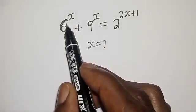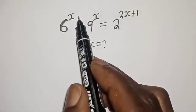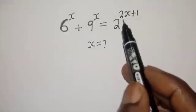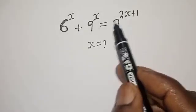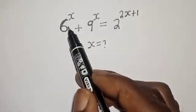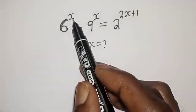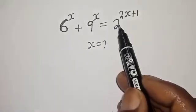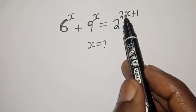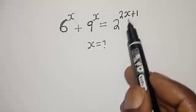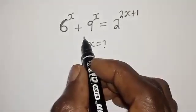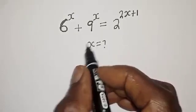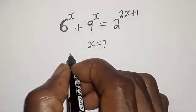Hi everyone, welcome to my class. In this class, we want to find the value of s from this equation: 6 raised to power s plus 9 raised to power s is equal to 2 raised to power 2s plus 1. But before we proceed, please don't forget to like, share, comment and subscribe.